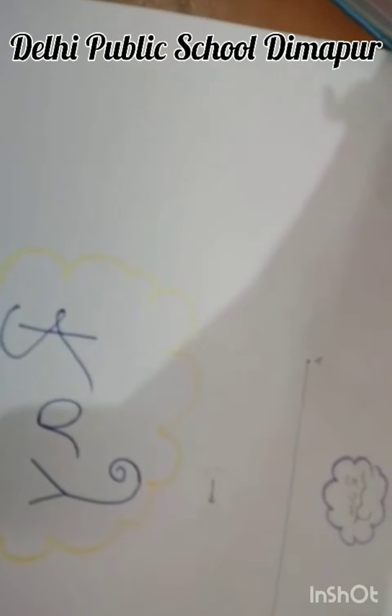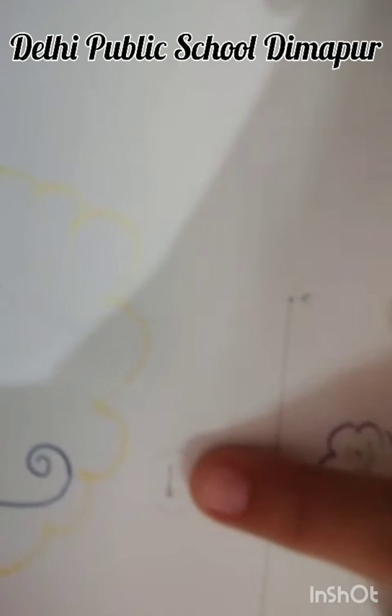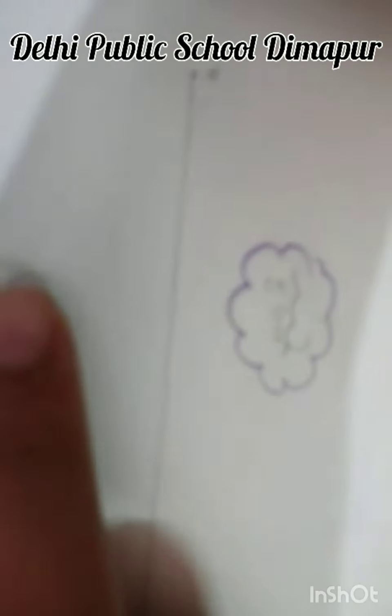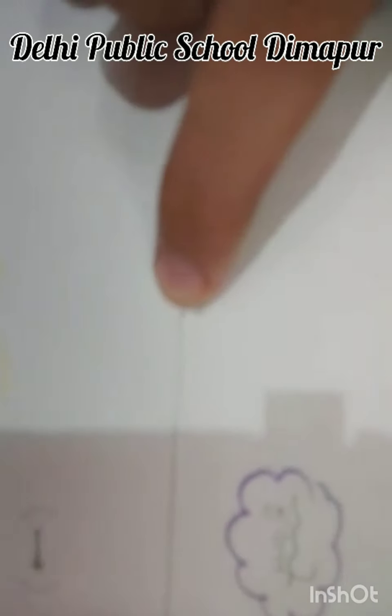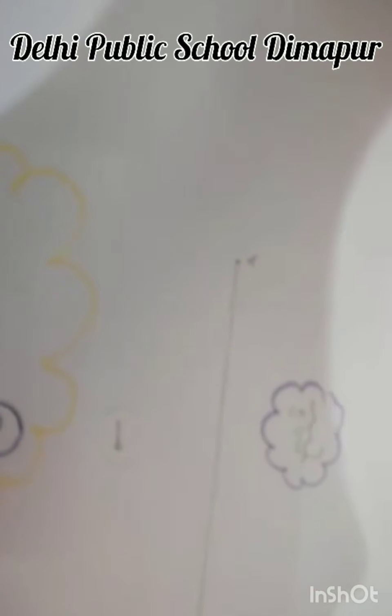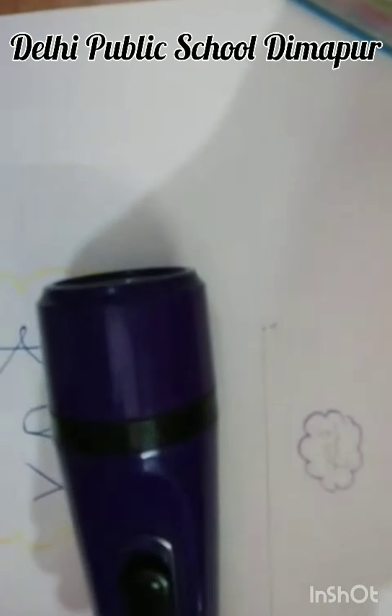Now let's talk about the ray. A ray is a portion of a line that starts at one point and goes endlessly in one direction. It is represented by an arrow showing it goes endlessly. The starting point of a ray is called the initial point or starting point.